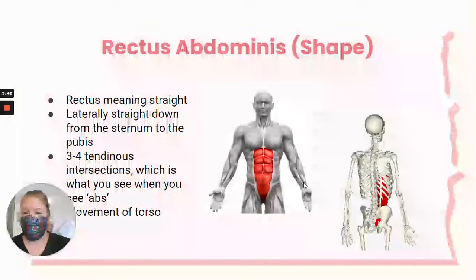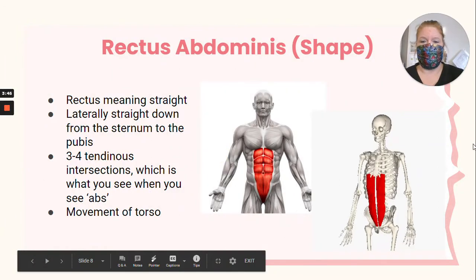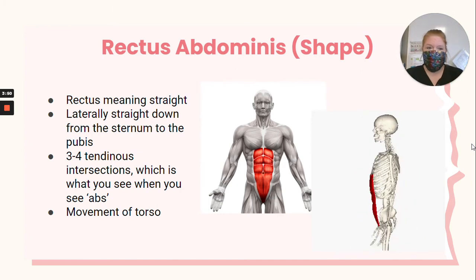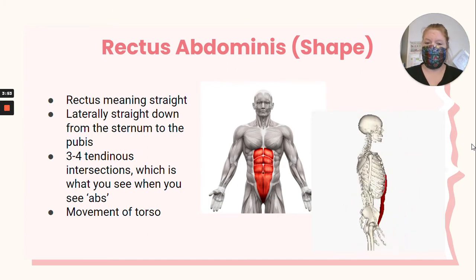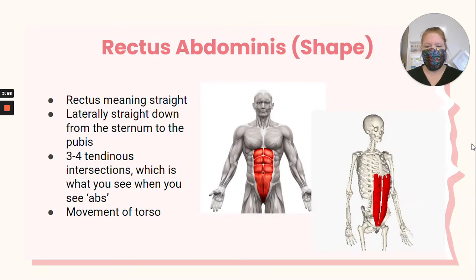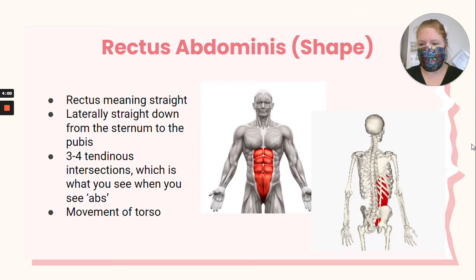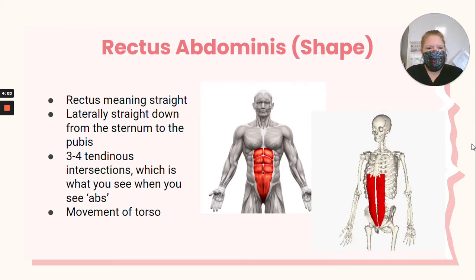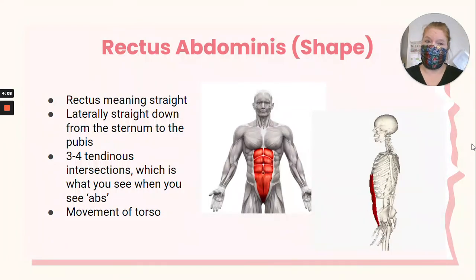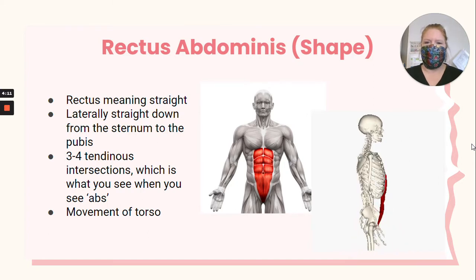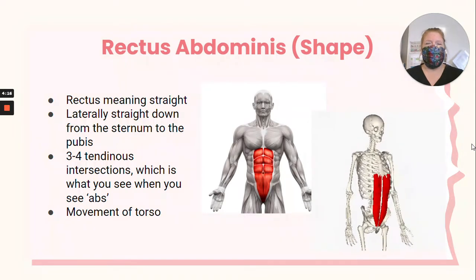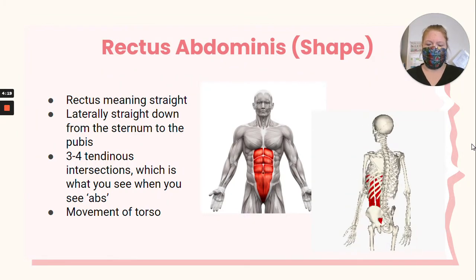The rectus abdominis is named for the way the muscle fibers align. Rectus means straight, so these fibers literally go straight down on your abdomen — from your sternum down to the pubis, part of your pelvic bone. There are three to four tendinous intersections, which gives the appearance of abs. The rectus abdominis allows you to move your torso, and you can feel that contraction when you do sit-ups or bend down.